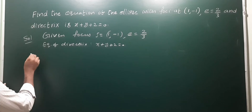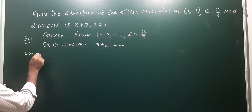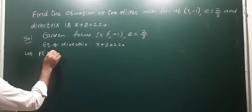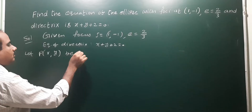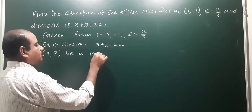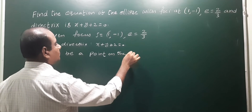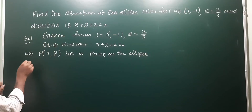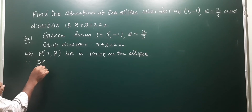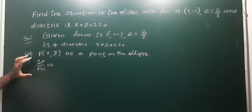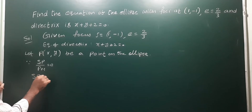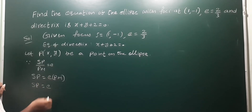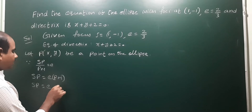That is the general form of the ellipse. Let P(x, y) be a point on the ellipse. Since SP/PM = e, we get SP = e × PM. Here PM means the perpendicular distance from point P to the directrix.